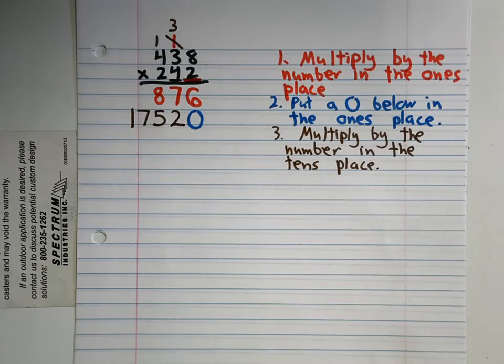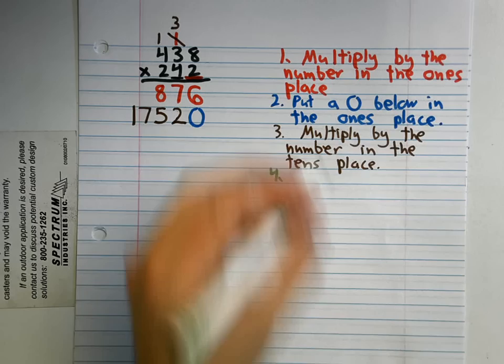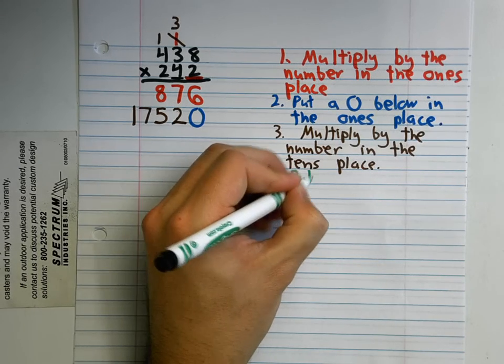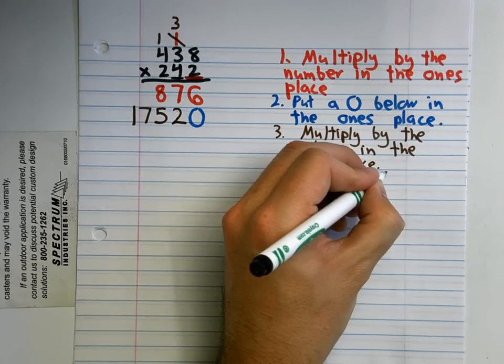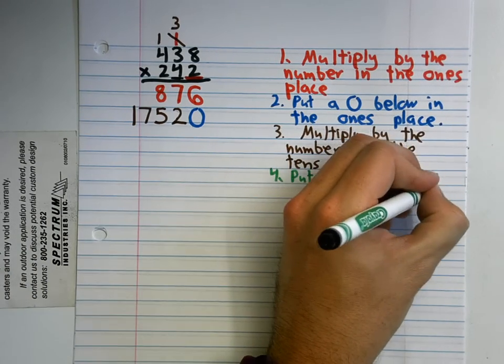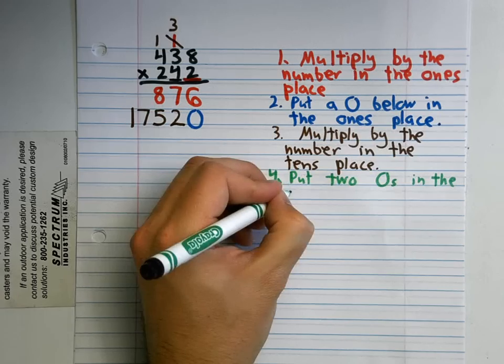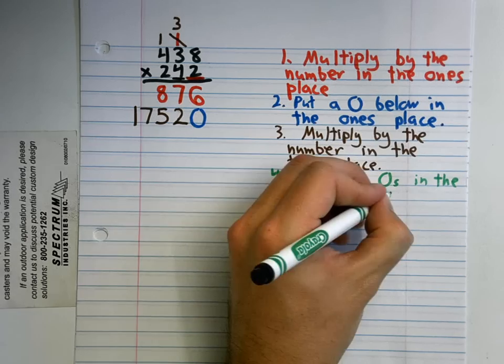Now this is where it gets different. This is where we change speed a little from what we did when we were only multiplying by a number with two digits. We are going to put two zeros now.